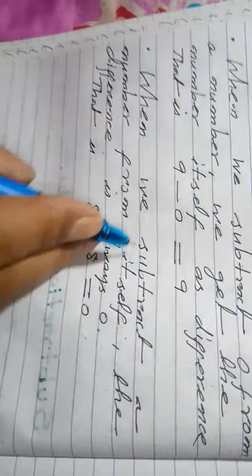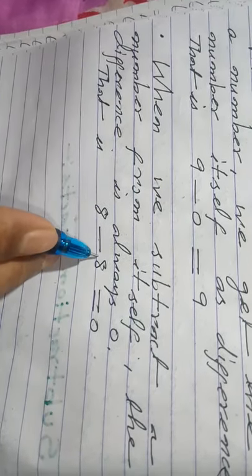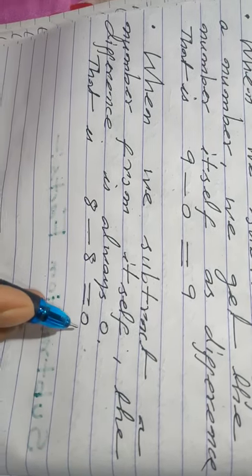When we subtract a number from itself, the difference is always 0. For example, 8 minus 8 equal to 0.